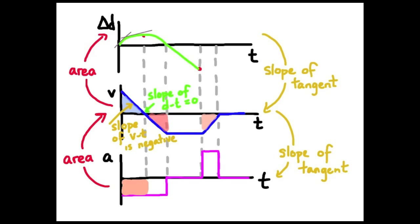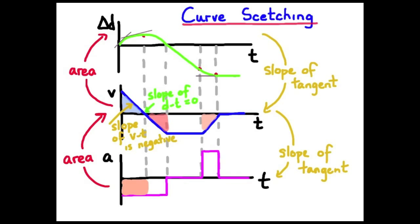Let's complete the position-time graph for the last two segments. Fourth segment: velocity is changing at a constant rate with positive slope, giving a parabola opening upwards. The velocity at the end of the fourth segment is zero, so the tangent to the position-time curve has slope zero there — that's the parabola's vertex. For the last segment, velocity is zero so position does not change — a horizontal line. Given one motion graph, we can derive the other two using slopes of tangents and area under the curve.